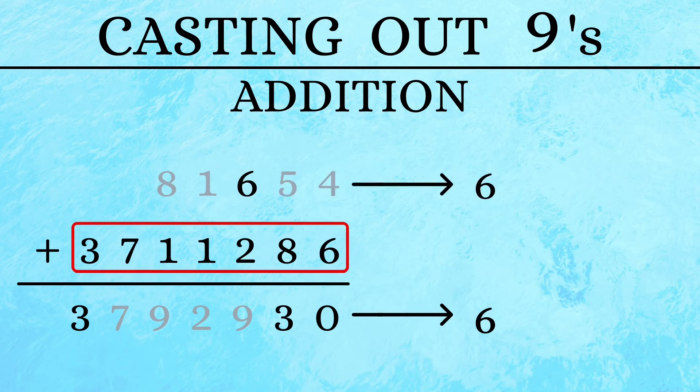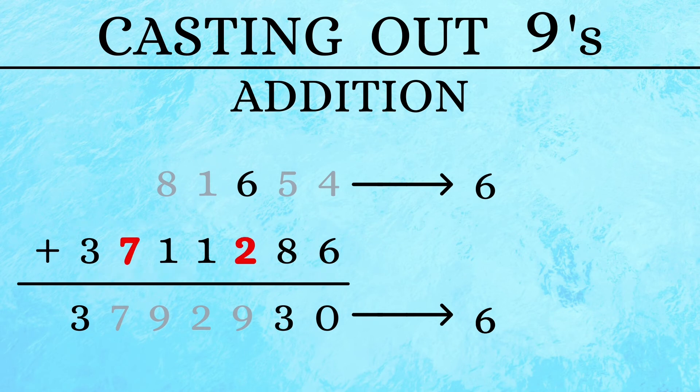3 plus 6 is also equal to 9. So cancelling out all these leaves out 1.